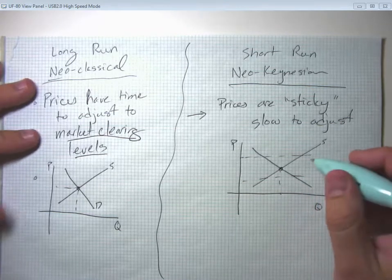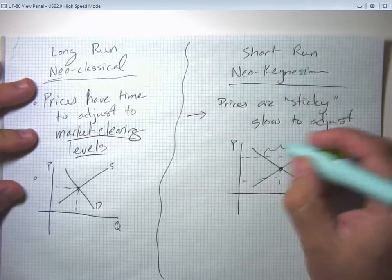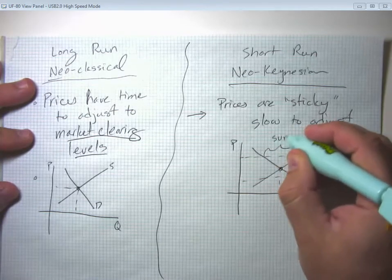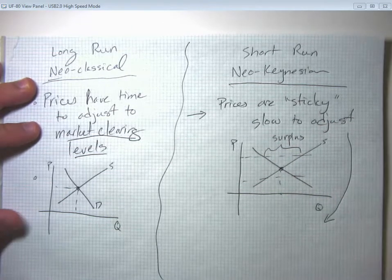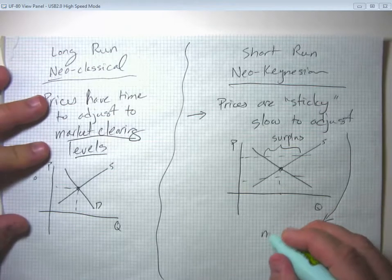So one way of thinking about unemployment is that we have a situation where wages are unable to adjust to the market clearing level. So we have surplus labor that creates unemployment. In a way, Keynesian analysis is about markets that are not in equilibrium.